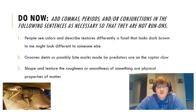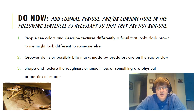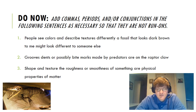Number one: people see colors and describe textures differently. A fossil that looks dark brown to me might look different to someone else. Number two: grooves, dents, or possibly bite marks made by predators are on the raptor claw. Number three: shape and texture, the roughness or smoothness of something, are physical properties of matter. Look at the end of every sentence as well — there's definitely one thing to add to each. Take a moment before we go over the answer key.